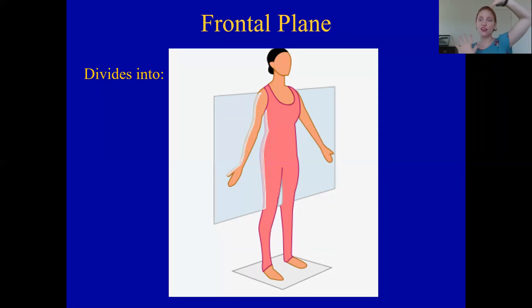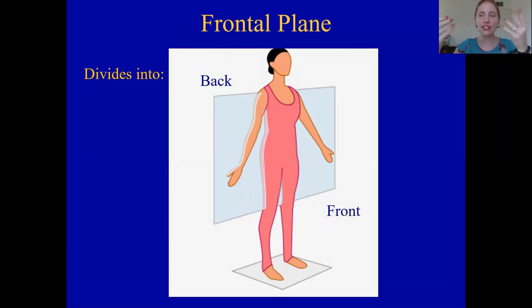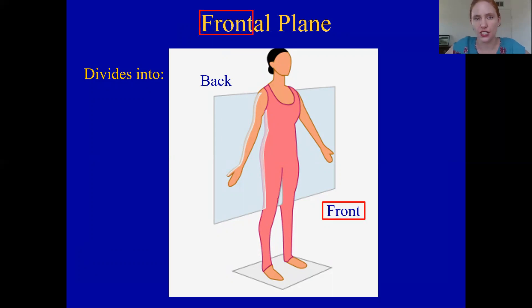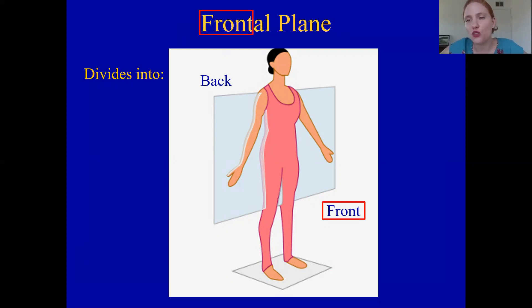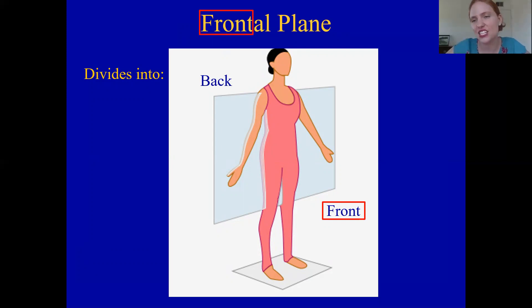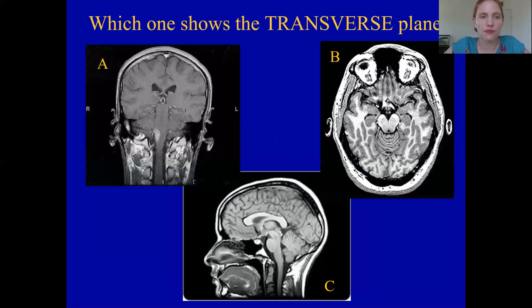Next is frontal. Pretend like you have a piece of glass sticking through your face right here — it divides the body into a front and a back. That would be called a frontal section. That's how I remember it: front and back equals frontal. By the way, you may hear the term coronal — a coronal section is the same thing as a frontal section. I like to use the word frontal because it's easier.